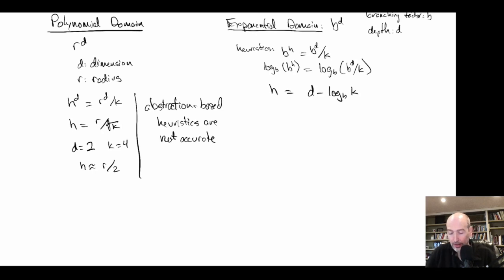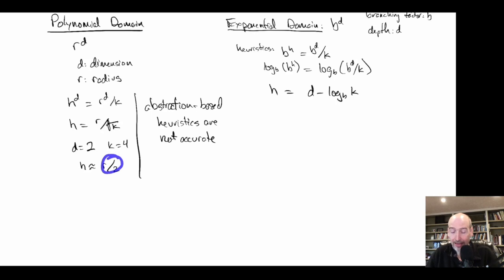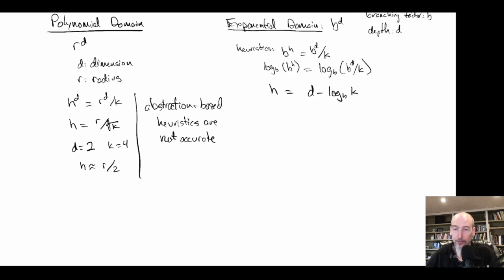Earlier work on multi-agent pathfinding around 2005–2006 used a workaround: since abstraction divides the heuristic, weighted A* was used to multiply it back up to compensate for the inaccuracy. However, this loses admissibility and guarantees of optimal or bounded suboptimal solutions. So for polynomial domains we need a different approach — one more attuned to how polynomial domains work.